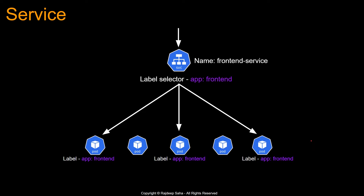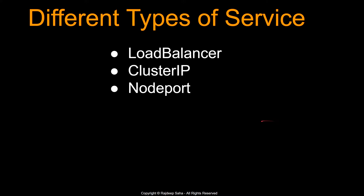Let's think about it for a second. Forget Kubernetes. Let's say you are in regular AWS, and you have a bunch of EC2s, and you need a mechanism to distribute traffic to those EC2s. What service do you use? Elastic Load Balancer. So you can think of a service as an Elastic Load Balancer — it's literally one of the service types. If you spin up a service on Kubernetes running on AWS, which is basically EKS, and you spin up a service of type load balancer, this will spin up an Elastic Load Balancer. Besides load balancer, there are two other types of service: Cluster IP and Node Port.